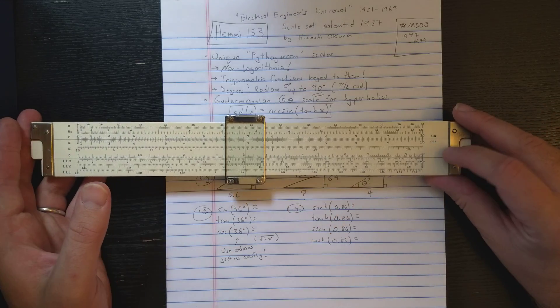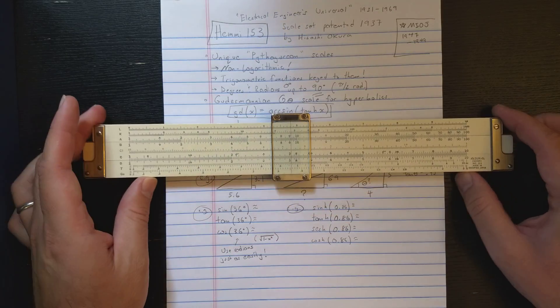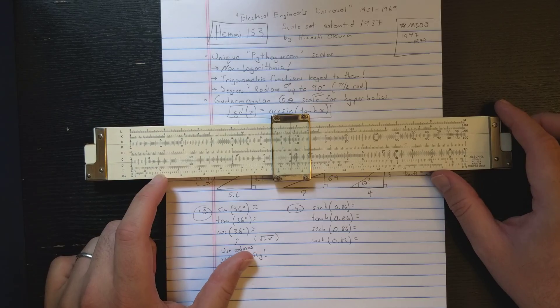The trigonometric functions are computed by using the theta scale in conjunction with P and Q. That's for sine and cosine, and that's what those reminders are about. And then for tangent, you have this separate T scale.